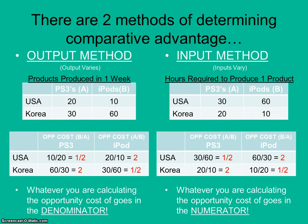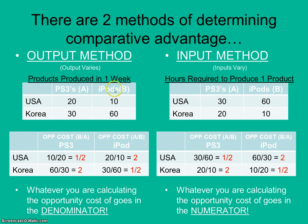There are two ways of determining comparative advantage, and the way you do the math — which number you pull over the other — depends on how the data is presented. Sometimes the data is presented where the output varies. That's what we saw in the Sarah and Rob example: they each have one hour of time as their input, and the output varies. Similarly, in a USA and Korea example, in one week the USA can make a certain number of PS3s or iPods, and Korea can make a different number — the output varies with a constant input. In that situation, pull those numbers over to do the math, just as we did with Sarah and Rob.